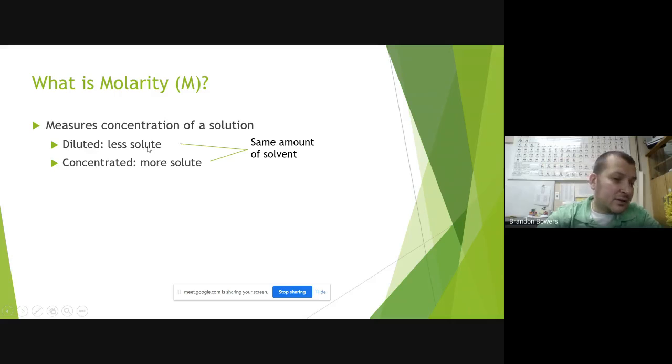There's diluted and concentrated. So when I say dilute, that means less solute. Solute means solid. So less solid and concentrated means more solid. And this is the equation. Molarity is equal to moles of solute over liters of solution.